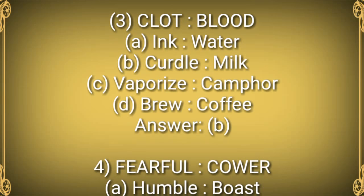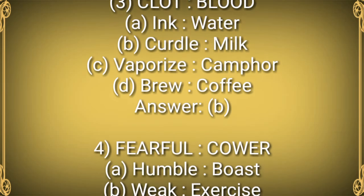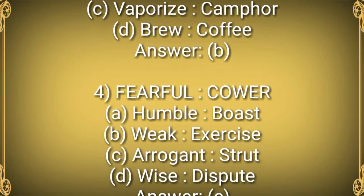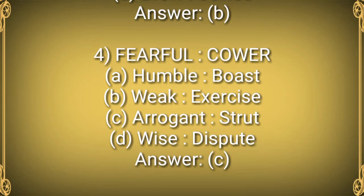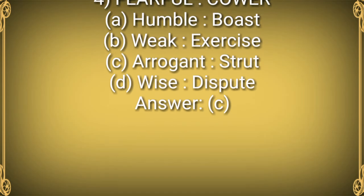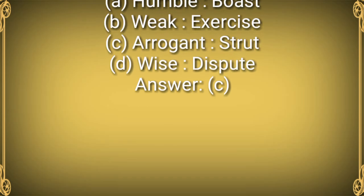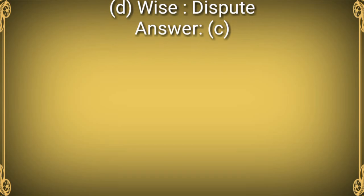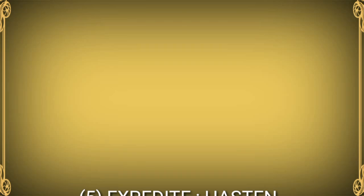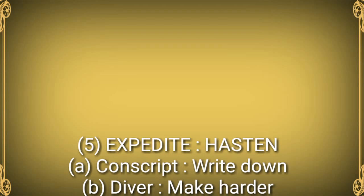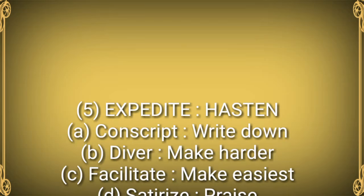Question 3: CLOT : BLOOD. Options: A) Ink : Water, B) Curdle : Milk, C) Vaporize : Camphor, D) Brew : Coffee. Answer: B. Question 4: FEARFUL : COWER. Options: A) Humble : Boast, B) Weak : Exercise, C) Arrogant : Strut, D) Wise : Dispute. Answer: C.